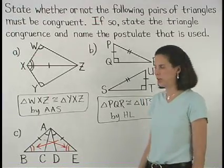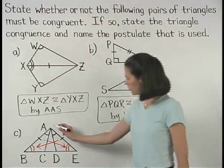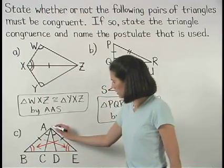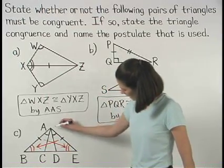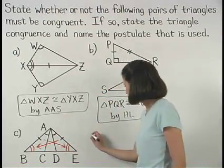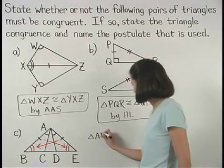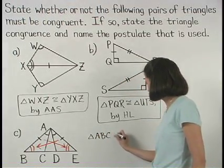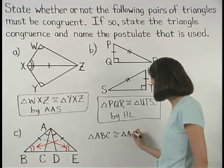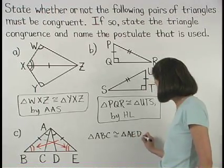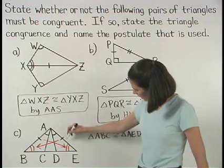Writing our congruent statement, we have triangle ABC congruent to triangle AED by angle side angle.